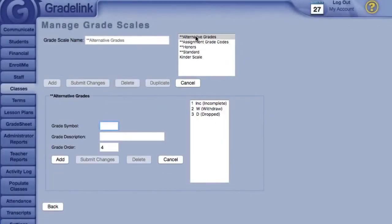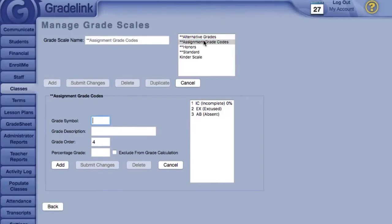Alternative Grades are non-standard grades that don't contribute to the GPA, such as incomplete or withdrawn. Similarly, assignment grade codes, such as excused or absent, are non-standard grades that are specifically applied to assignments.